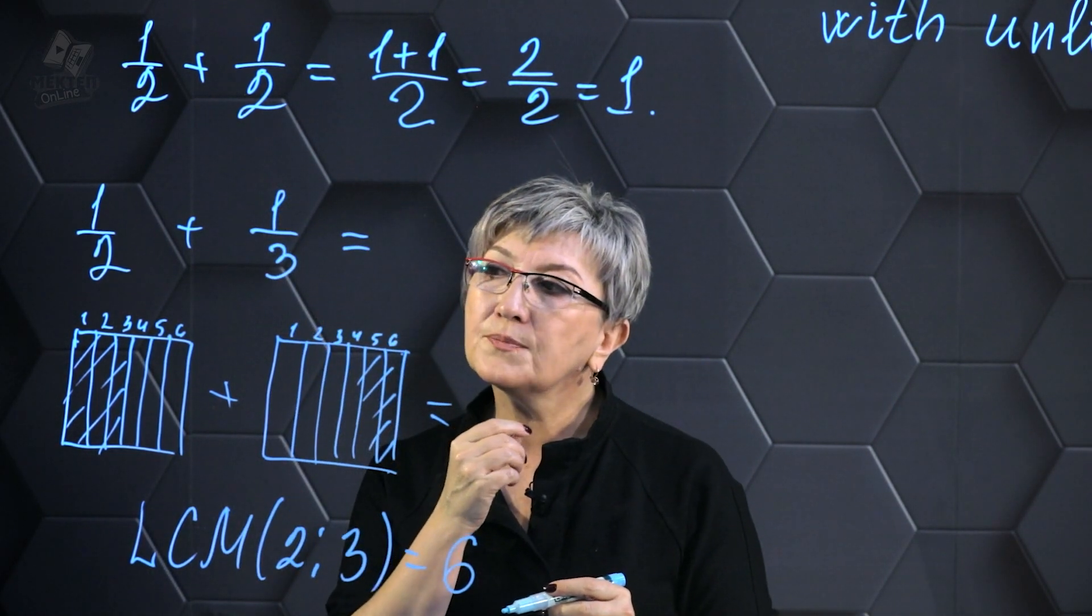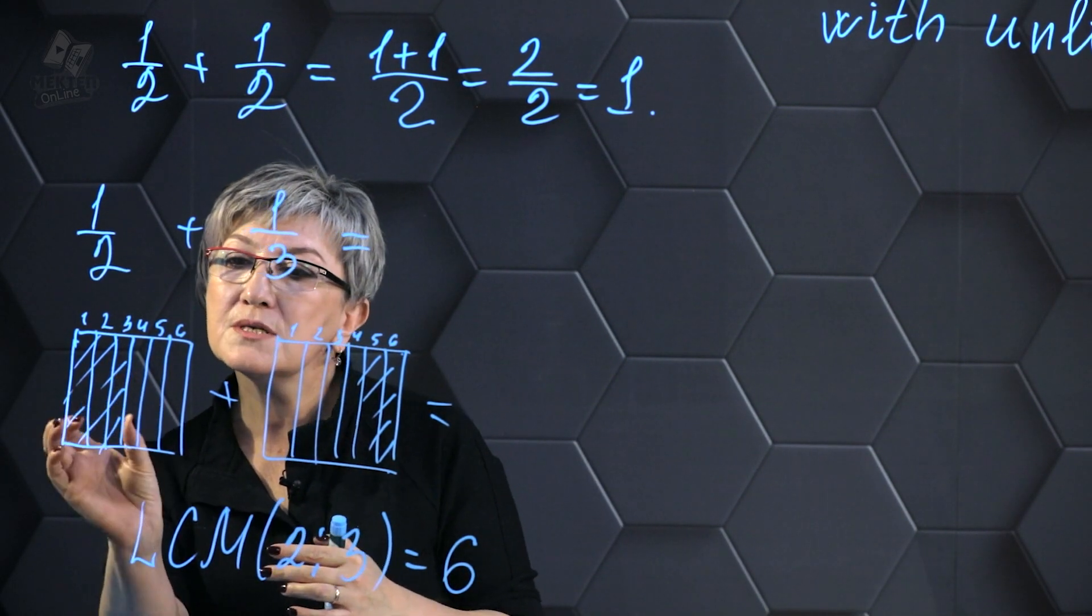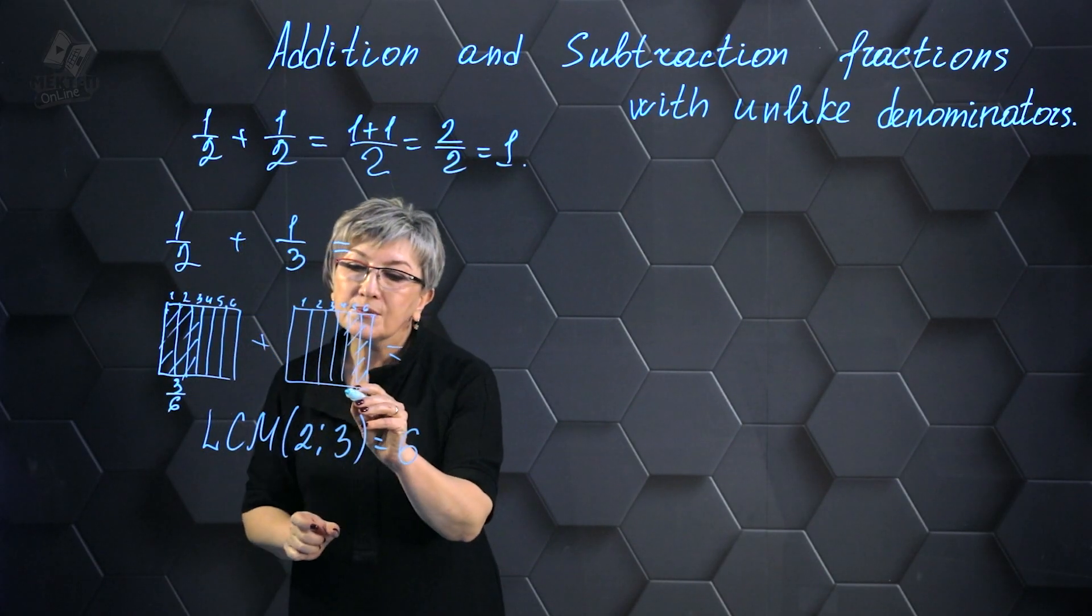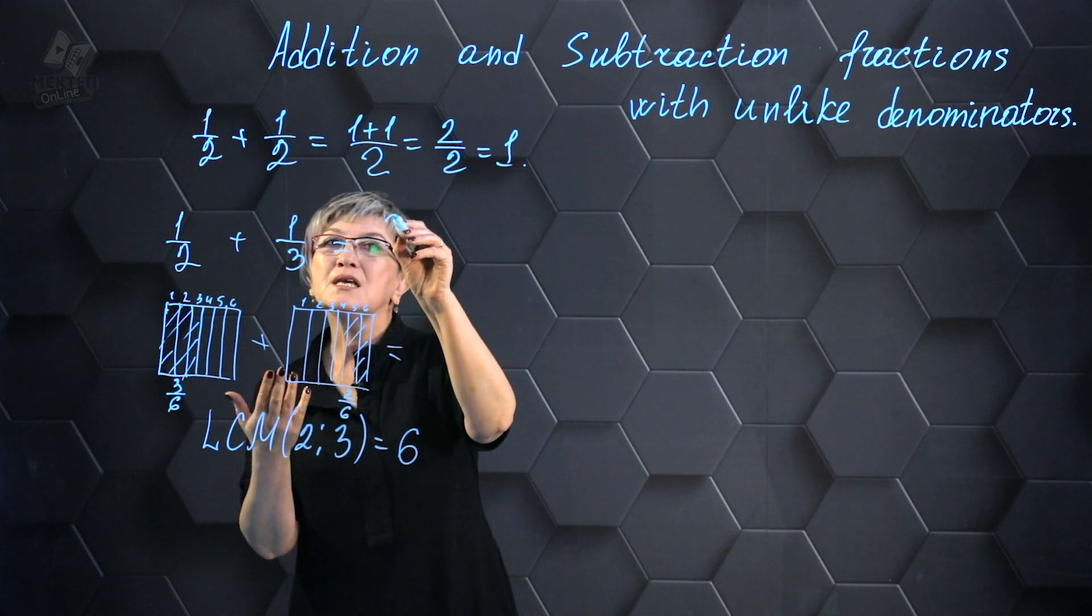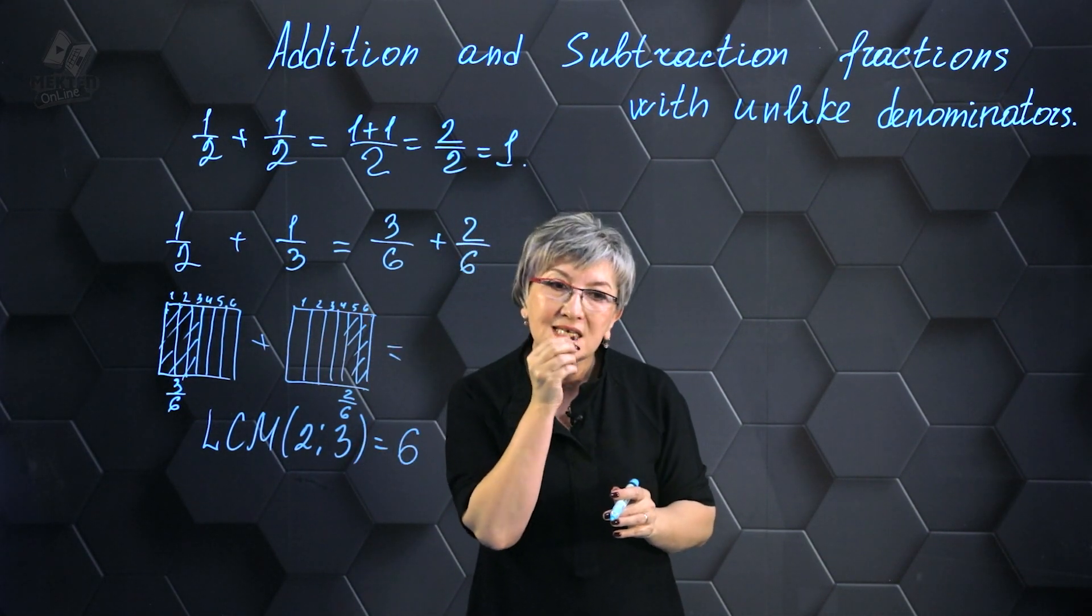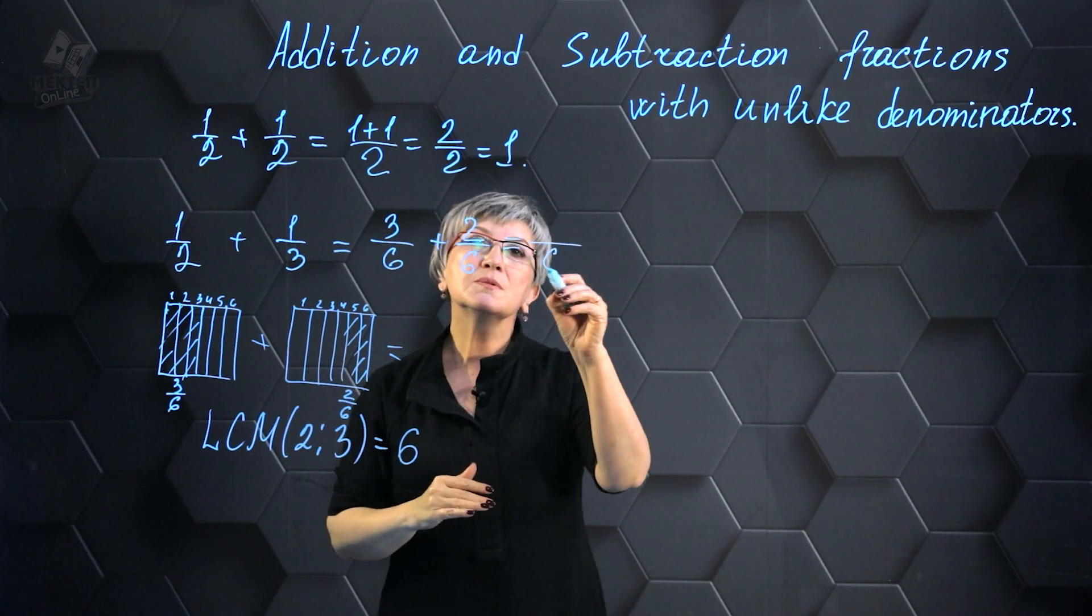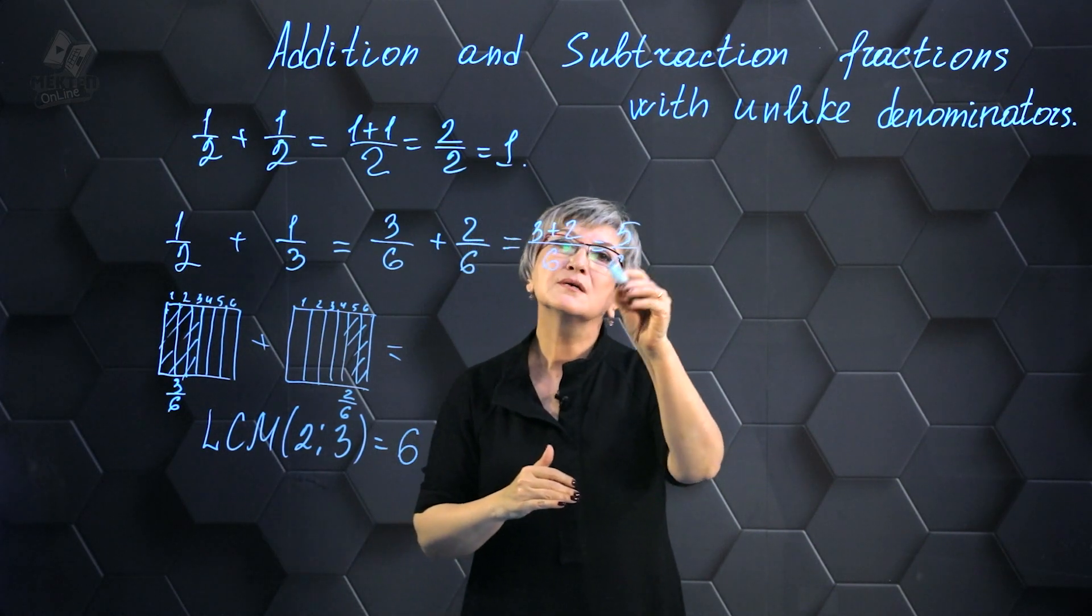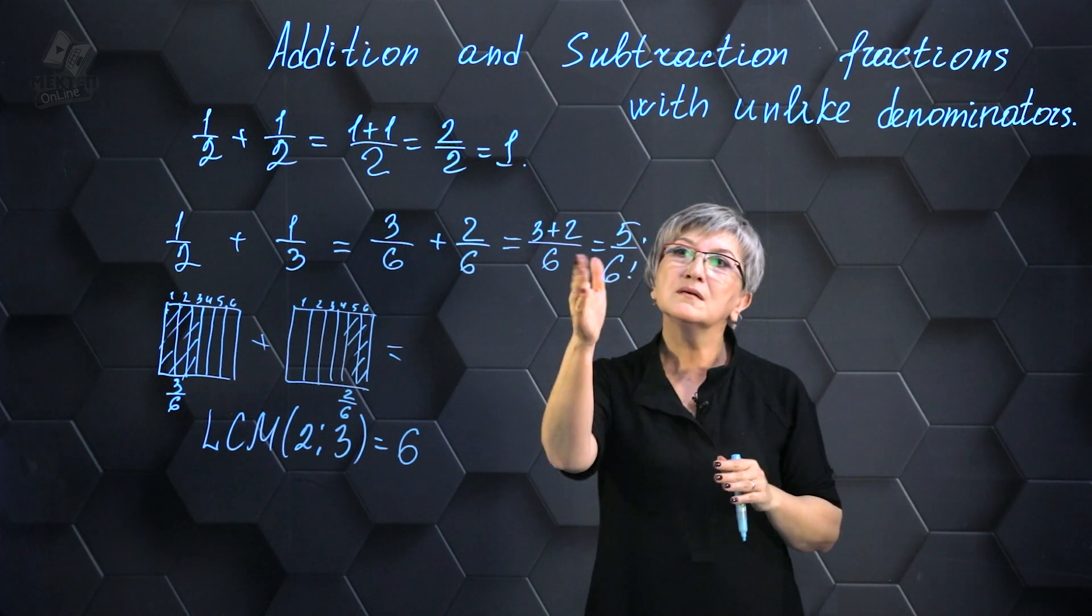Therefore, the total is 3/6 plus 2/6 and I have successfully achieved the same denominator. By dividing the square into six equal parts, I can clearly observe the fractions and their sums. The denominator remains unchanged at 6. I add 3 and 2 together and the outcome is 5/6. I have solved this problem and determined the value of the sum.